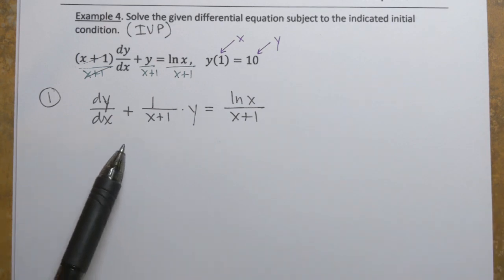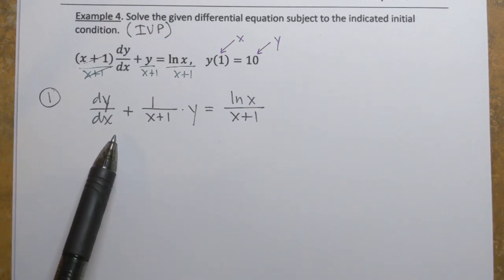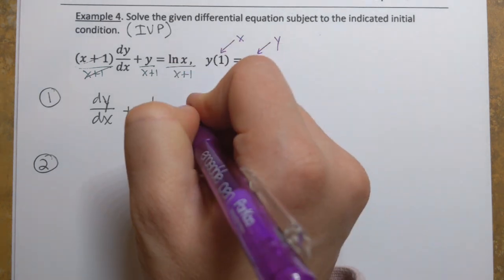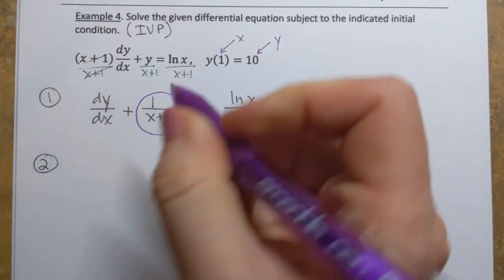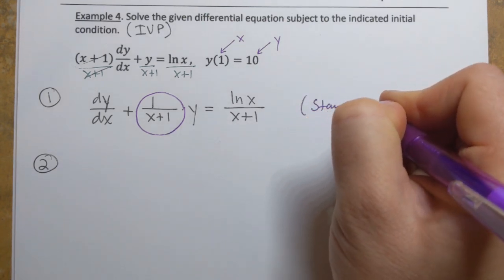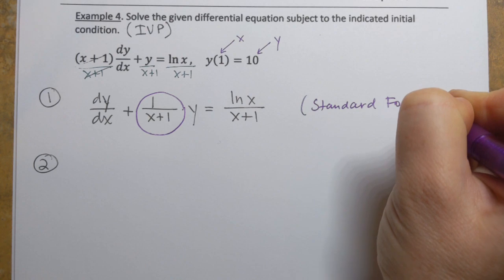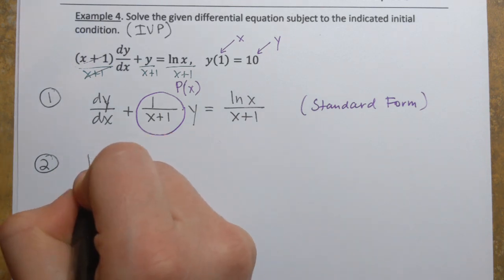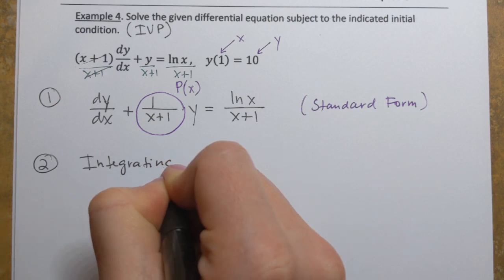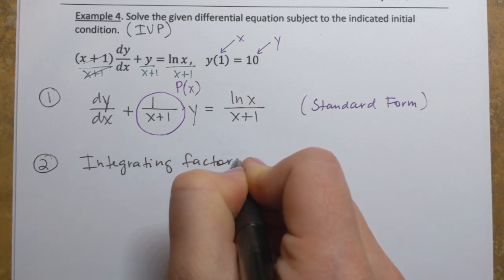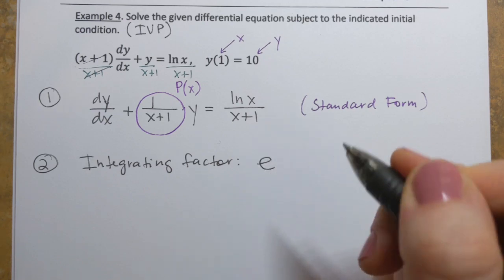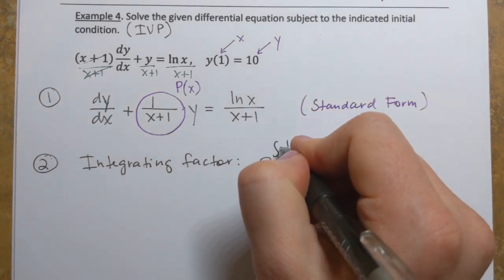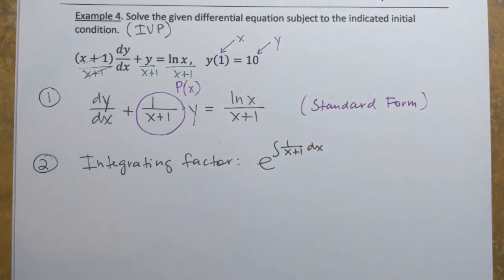In the next step, we need to find the integrating factor. To find the integrating factor, we first need to identify P(x), which is the coefficient of y when the equation is written in standard form. So that is 1 over (x plus 1) — that's what we call uppercase P(x). Now, the integrating factor: we take e and raise it to the power that is the integral of P(x), so the integral of 1 over (x plus 1) dx in our case.